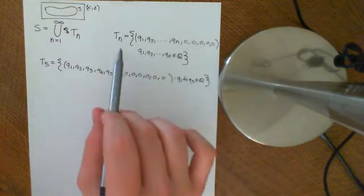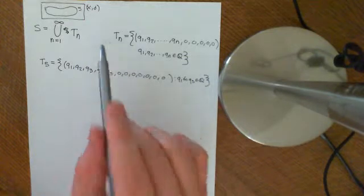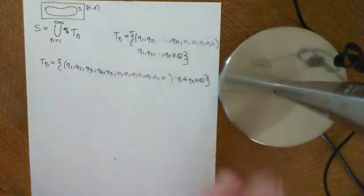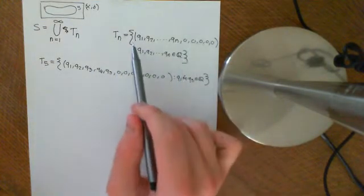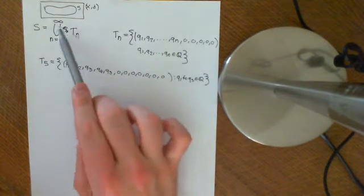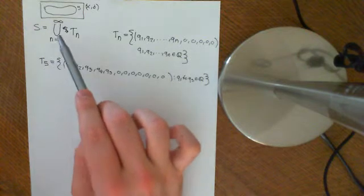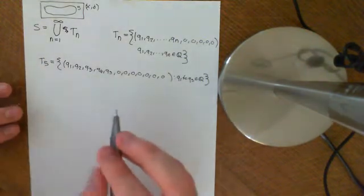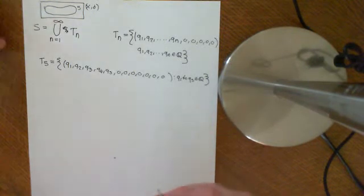The first thing we want to do is prove that each of these Tn sets, for any natural number n — 1, 2, 3, 4, etc. — is a countable set. Then I want to use that fact to prove that S is a countable set. And S is going to be the set we use to show that the metric space Lp is separable.